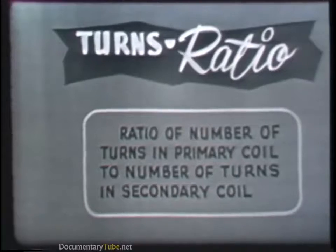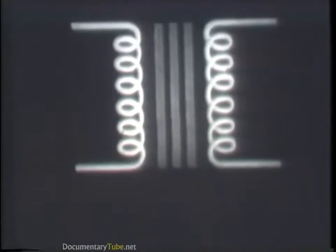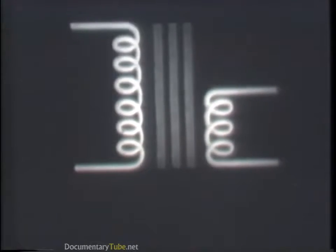For example, if the primary coil has 500 turns and the secondary 1,000 turns — twice the number of the primary, or a ratio of 1 to 2 — the voltage doubles. The ratio is 1 to 2, so the voltage is stepped up because the secondary coil is the largest. If, on the other hand, the secondary is the smallest, the voltage is stepped down. Either way, voltage is transformed.